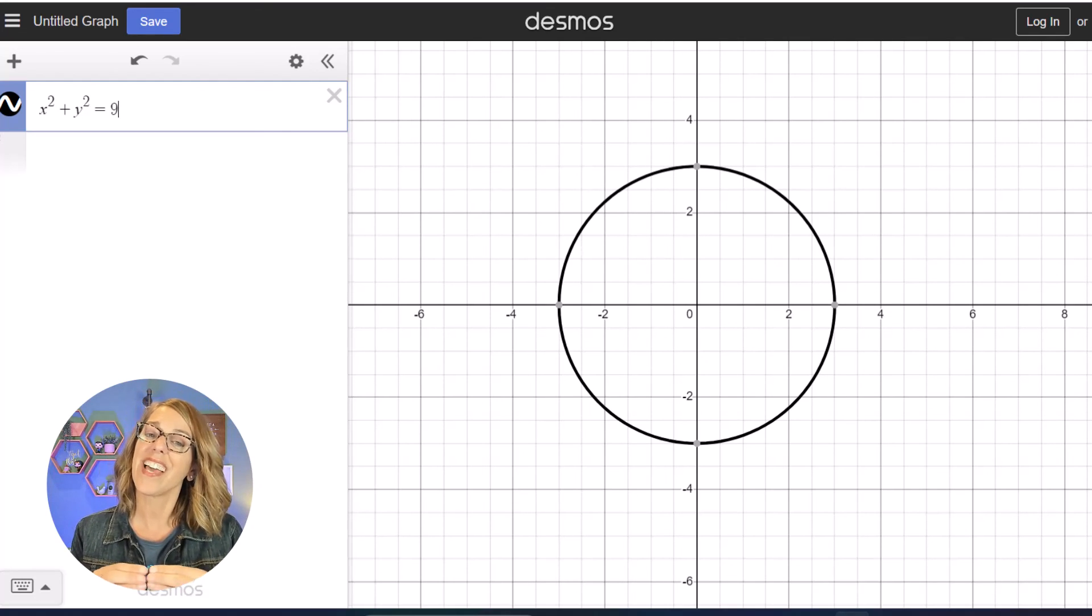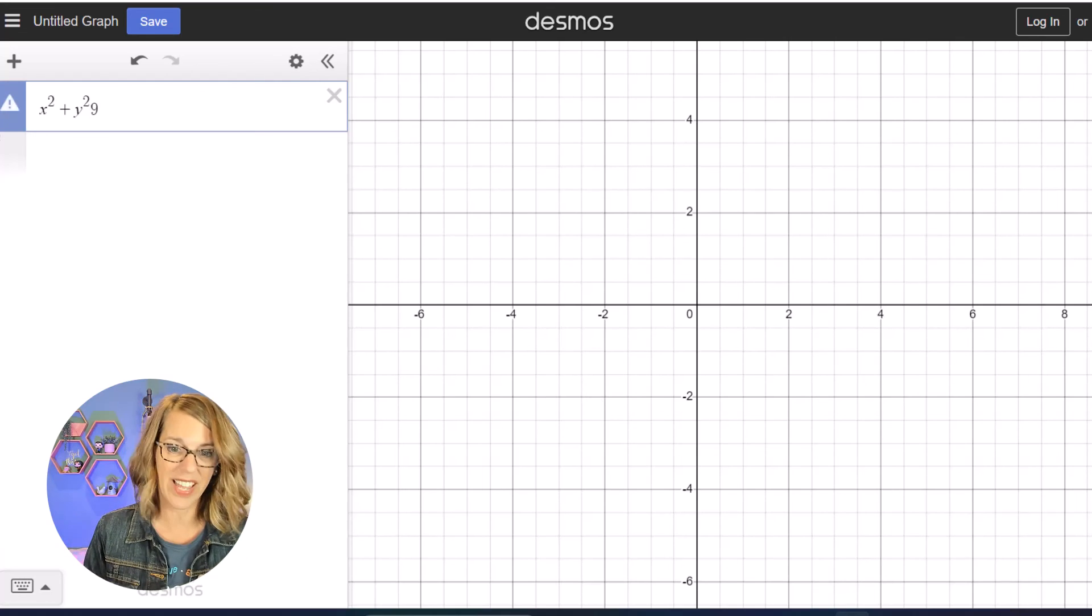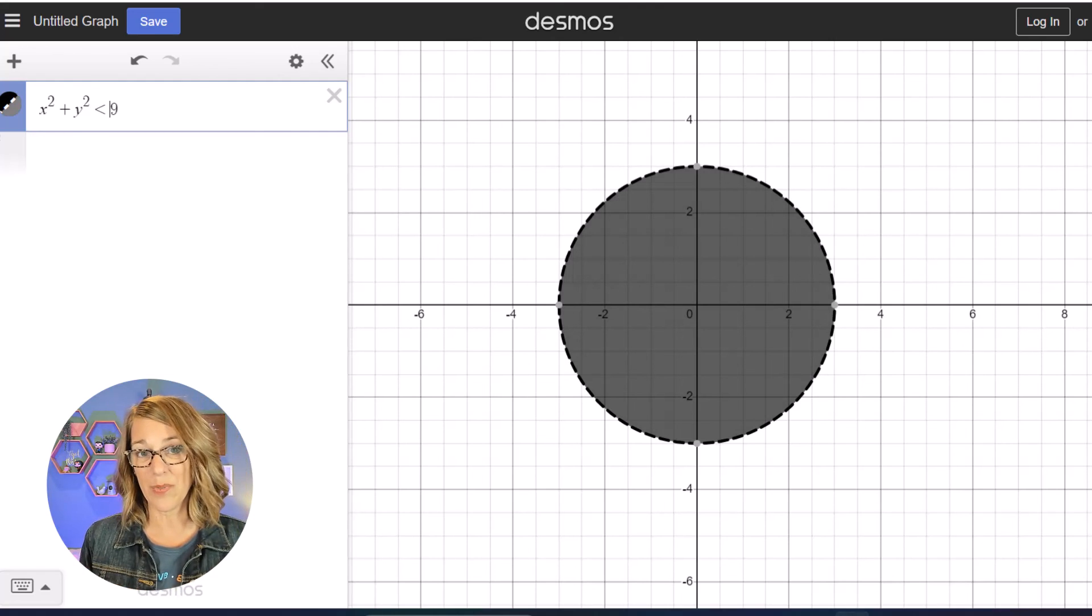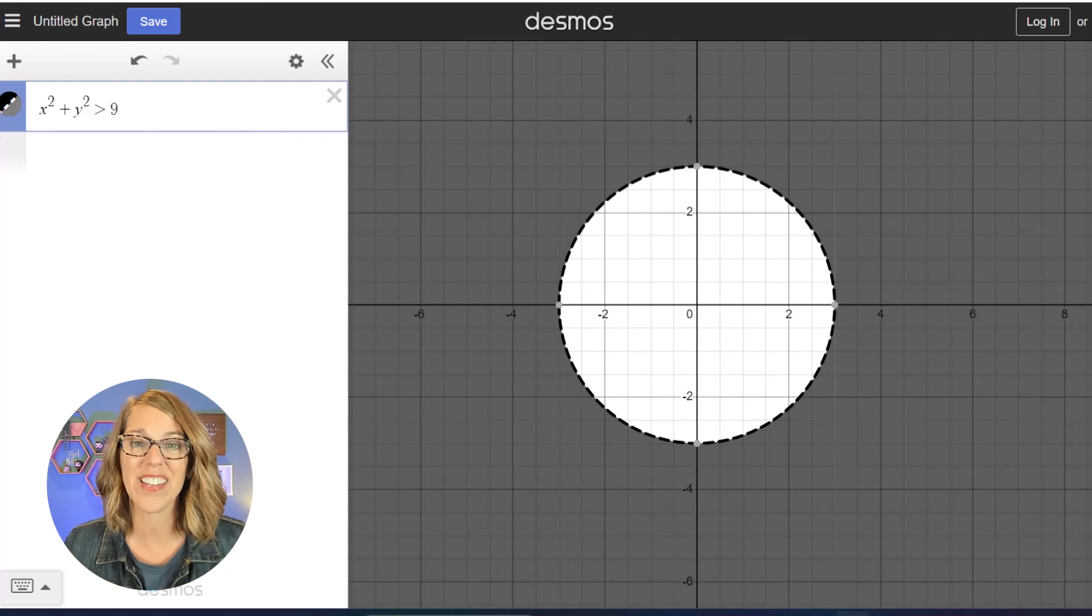If I want to do inside the circle, I want everything that has a radius smaller than 3. So this is going to be less than or less than or equal to, and if I want everything outside of that circle it's going to be greater than.